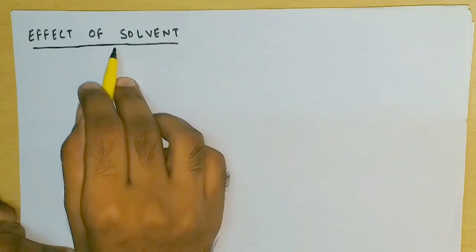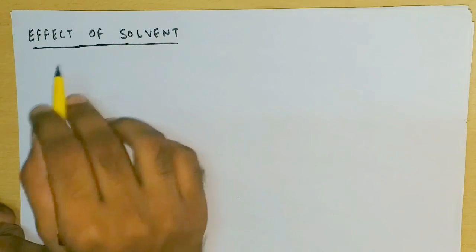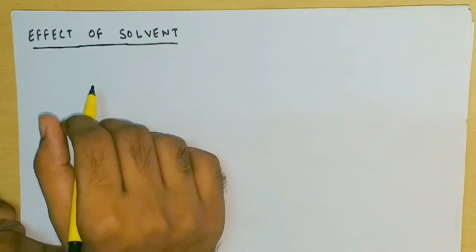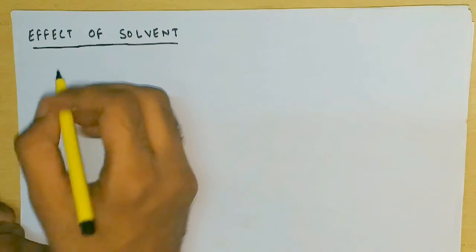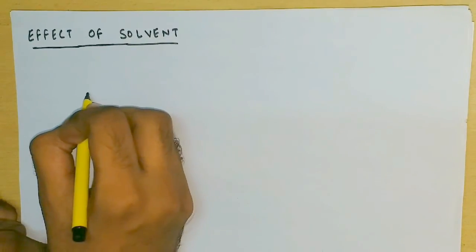In the fourth video of this tautomerism series, I will be illustrating the effects that a solvent has on the keto-enol equilibrium established in it. Those effects are notable particularly when the keto or enol structures have intramolecular hydrogen bonding in them.